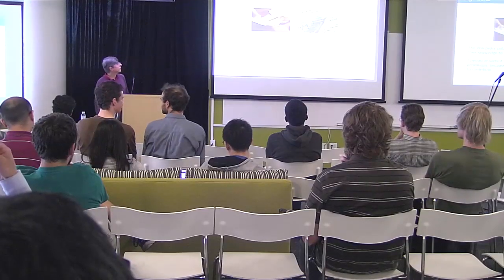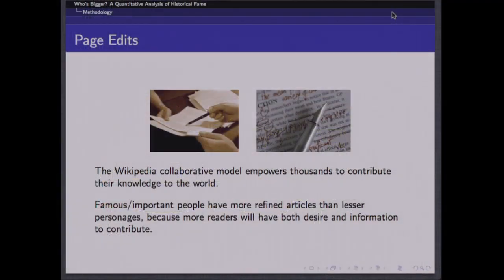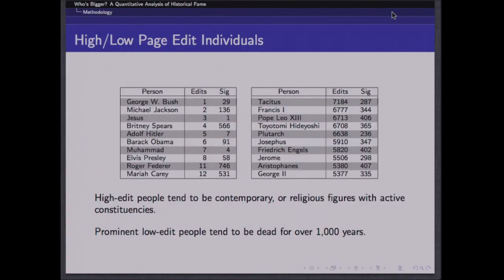Another measure is Wikipedia page edits. Anybody's allowed to edit Wikipedia. You would expect that if you're a well-known, significant person, more people will know about you, more people have something to contribute, and more people will care — therefore you'll probably get more edits. Who are the high-edit people? We see people with constituencies — controversial figures and religious figures tend to generate a large number of edits, probably due to flame wars between constituencies. Whereas the low-edit people are largely those who have been dead for a thousand years and aren't generating very much new material.